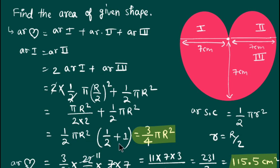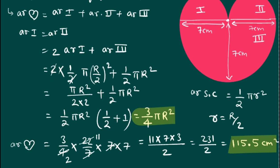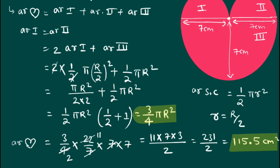We can easily find the area of the given shape if we know the formula: area = (3/4) π R², where R is the radius of the bigger semicircle. I hope you understood the video. That's all for today — thank you for watching, bye bye and take care.